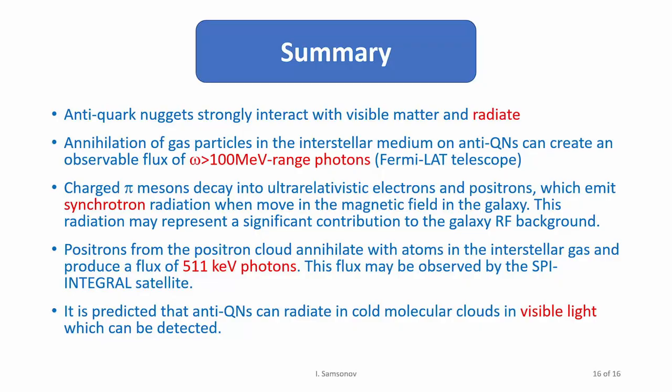This is just my summary for our work. I would like to say that this model is interesting because it allows us to explain many different phenomena in astrophysics. For instance, if you have any anomaly in astronomical or astrophysical data, there's a good chance that this anomaly may actually be explained within the quark nugget model. That's the attractive feature of this model. Thank you.